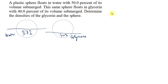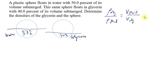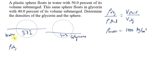We're going to use the formula for an object that is partially submerged in a fluid: the density of the object over the density of the fluid equals the volume of fluid displaced over the volume of the object. We know that the density of water is 1,000 kg/m³. Starting with the first situation, the density of the plastic sphere over the density of water equals the volume of water displaced over the volume of the object.